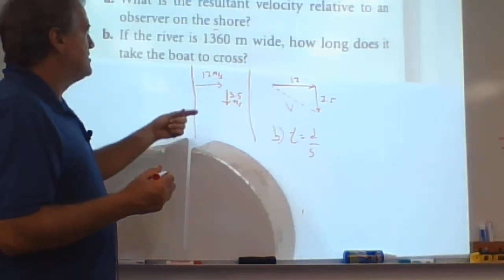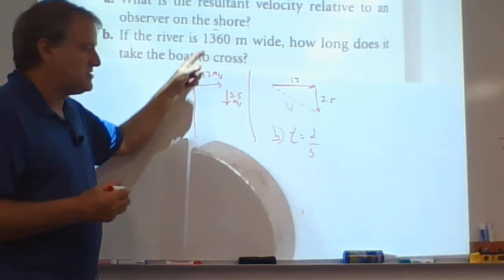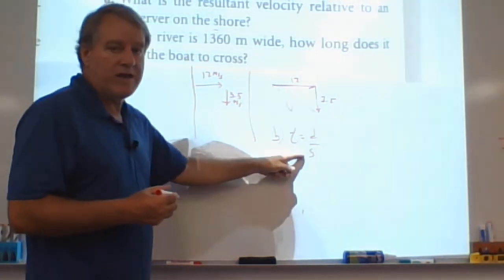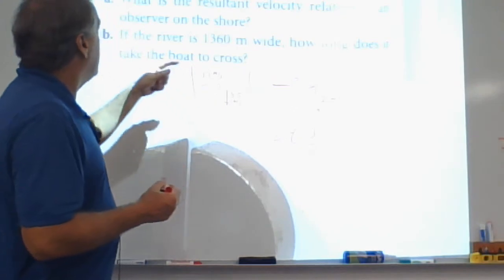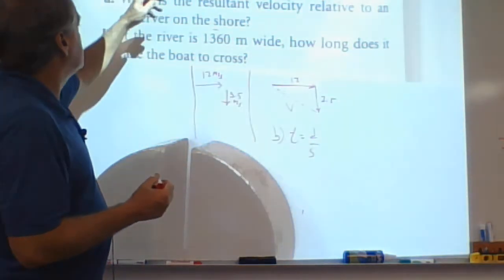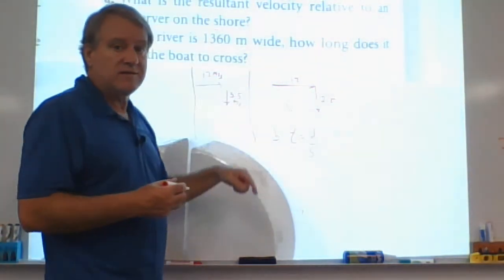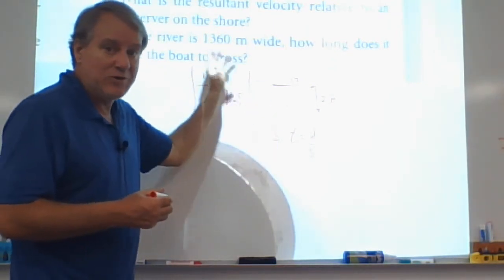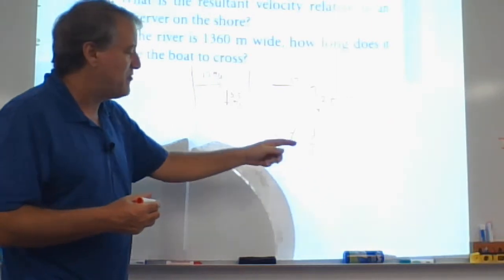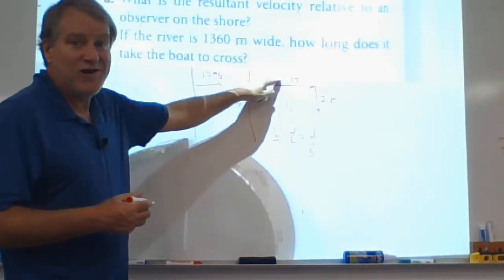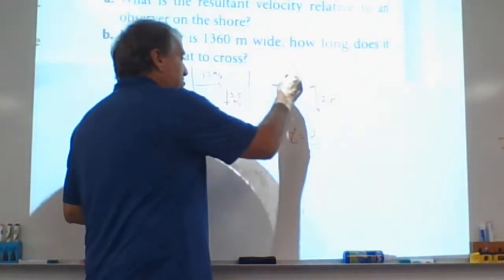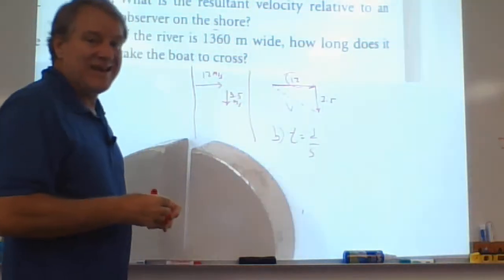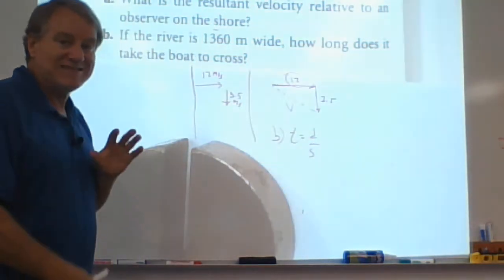So do we know the distance you're traveling? Yeah, 1360. Do we know the speed you're going at? Yeah. He's going across it at 12 meters per second. Now, you don't use this speed. That's his resultant speed. But he's also going to resultant distance. So you can't use that one. You have to use the 12 because that's the speed he's traveling across it at. And that's going to confuse some of you. That's why this is a neat question.